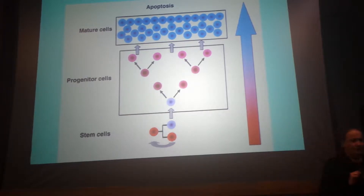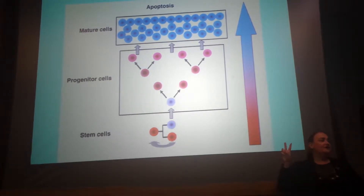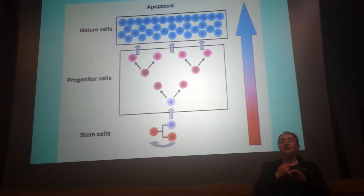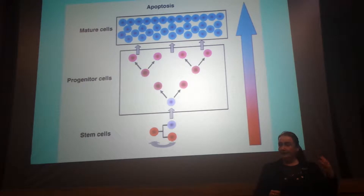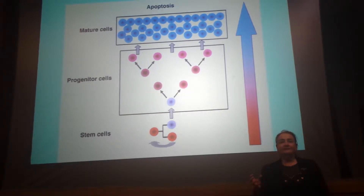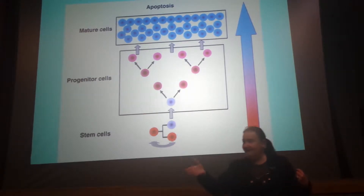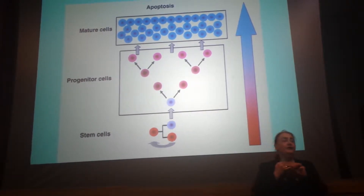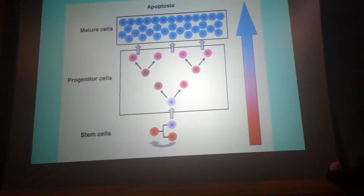Stem cells have two features. When a stem cell divides into two, one will be developing into a certain lineage of a cell. What will happen to the second one? If it develops as well, then we'll lose a stem cell. It remains a stem cell and then divides again. One will differentiate, the second will remain as a stem cell. So there are two features of any stem cell: one is self-renewing, because one daughter always remains a stem cell and doesn't differentiate, and the second is the ability to give rise to any possible lineage of cells.